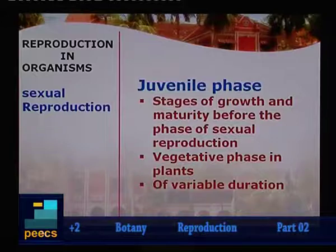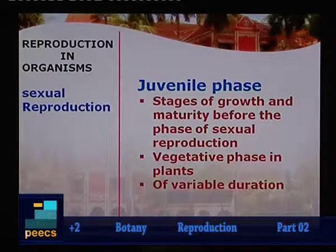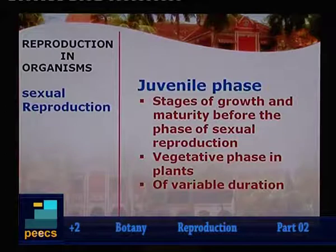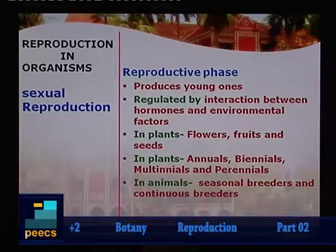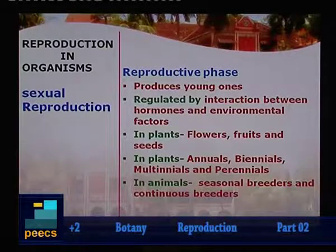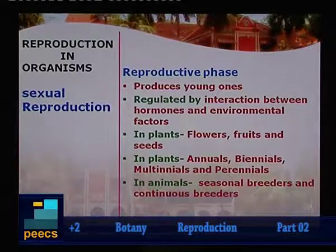The juvenile stage or the vegetative stage comprises the growth of the organism and maturity before the phase of sexual reproduction. It represents the entire vegetative period of the organism. The duration is variable according to the organism. The second stage is the reproductive phase, producing young ones regulated by interaction between hormones and other environmental factors — in plants, flowers, fruits and seeds.